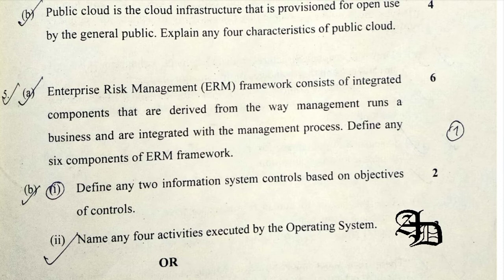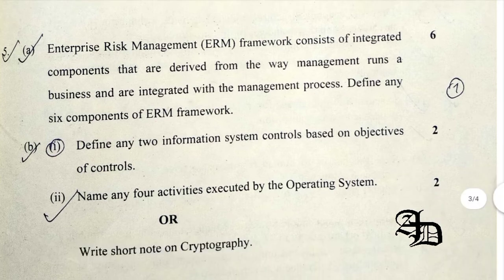Question 5B1 was related to defining any 2 information system controls based on the objective of controls — preventive controls and detective controls. Question 5B2 was related to naming any 4 activities executed by an operating system, which include user interface and performing hardware functions.